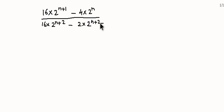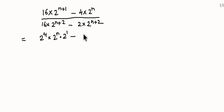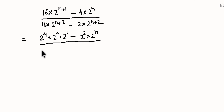इसको solve कैसे करेंगे — हम 16 को लिख सकते हैं 2 to the power 4. तो 16 के जगह लिखेंगे 2 to the power 4 multiply by 2 to the power n multiply by 2 to the power 1, minus 2 to the power 2 multiply 2 to the power n.